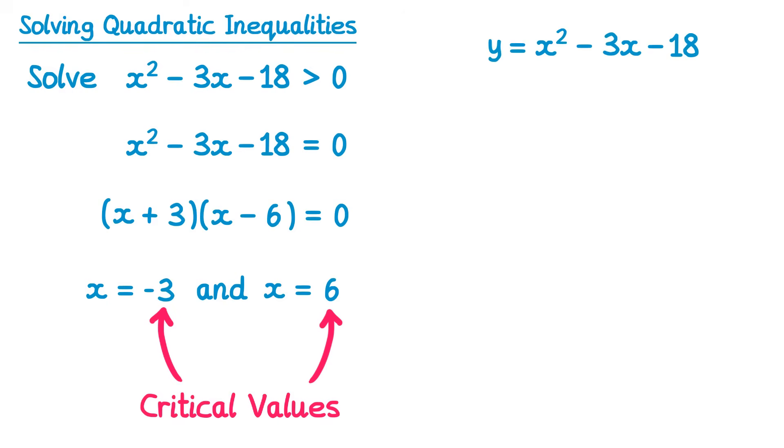So when we come to draw the graph, we know the graph will go through those critical values, so it must cross at negative 3 and it must cross at 6. And again, this is a positive x squared, so it'll make a u-type shape, something like this.